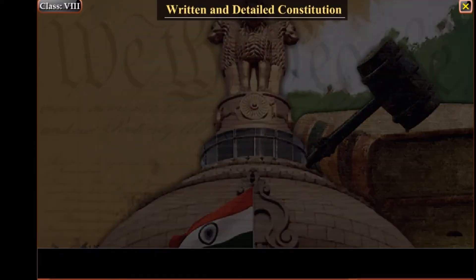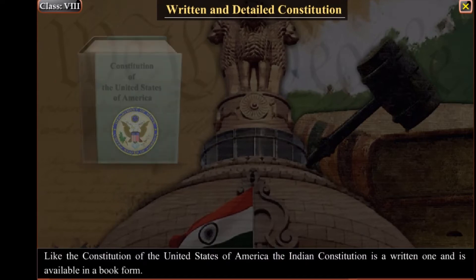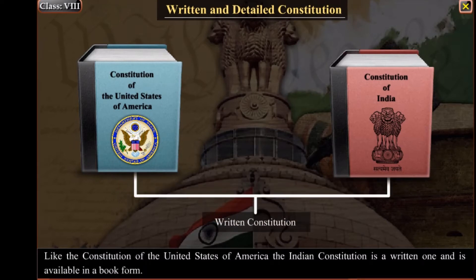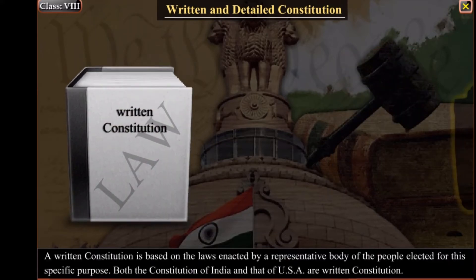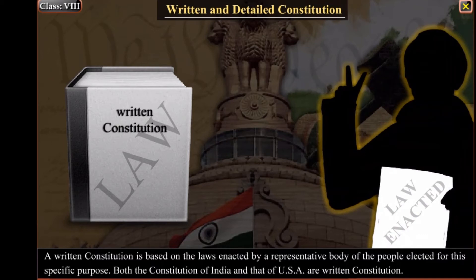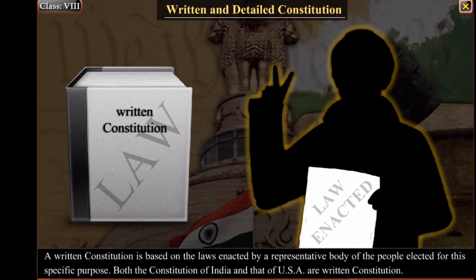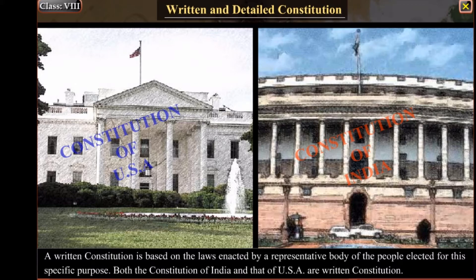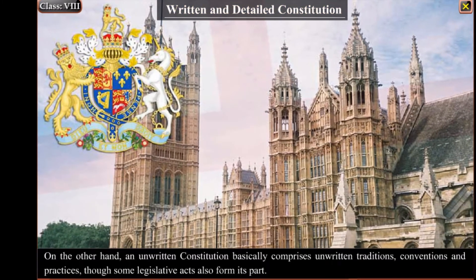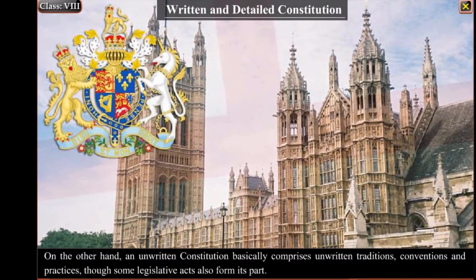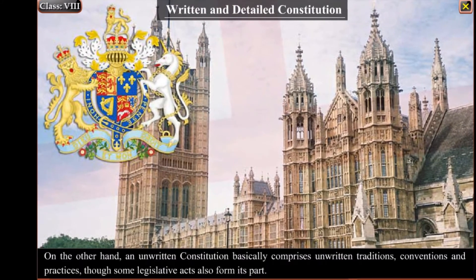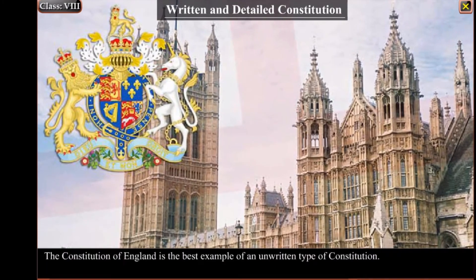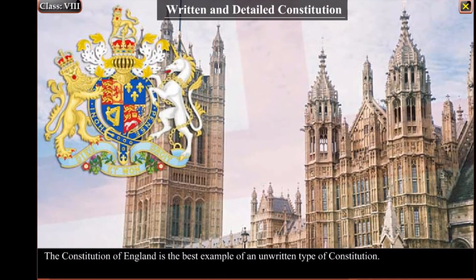Written and detailed constitution: like the constitution of the United States of America, the Indian Constitution is a written one and is available in book form. A written constitution is based on the laws enacted by a representative body of the people elected for this specific purpose. Both the Constitution of India and that of the USA are written constitutions. On the other hand, an unwritten constitution basically comprises unwritten traditions, conventions and practices, though some legislative acts also form its part. The constitution of England is the best example of an unwritten type of constitution.